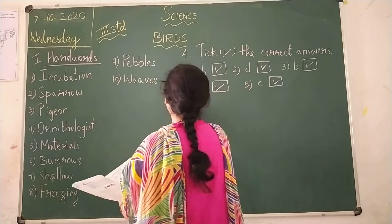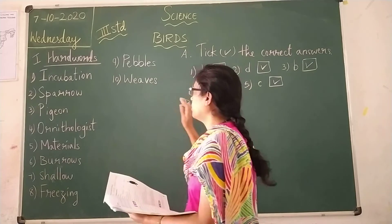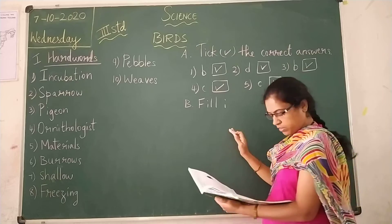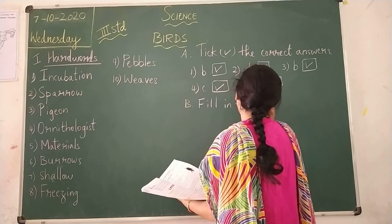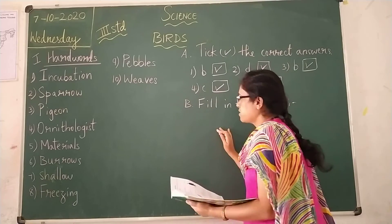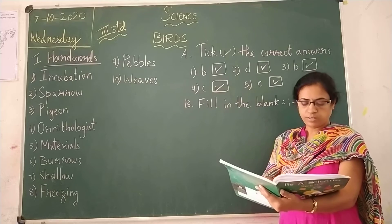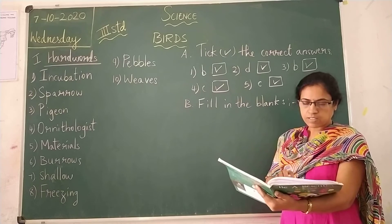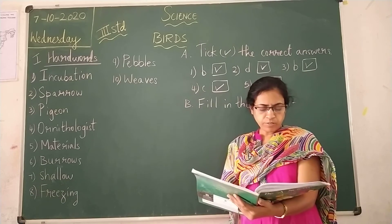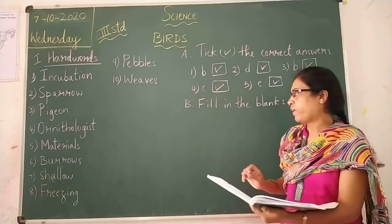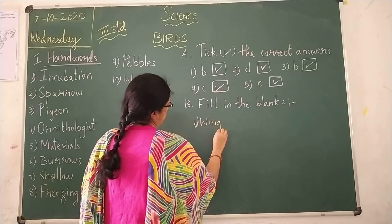And then, next one is fill in the blanks. So, after hard words, you need to write this one. So, make this one as a, you have to write in the classwork. Fill in the blanks. Only answers I will write. So, you need to write question in the classwork while writing. You copy the question and write the answers. Just write down in your textbook now. First one, children. Birds have two legs and a pair of wings. And a pair of wings. W-I-N-G-S.